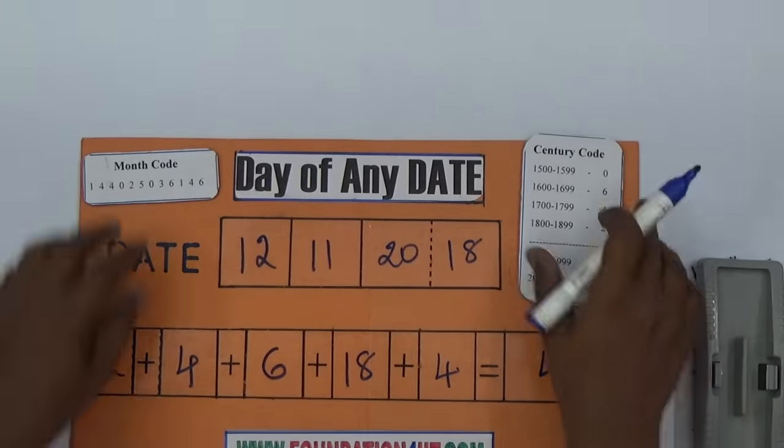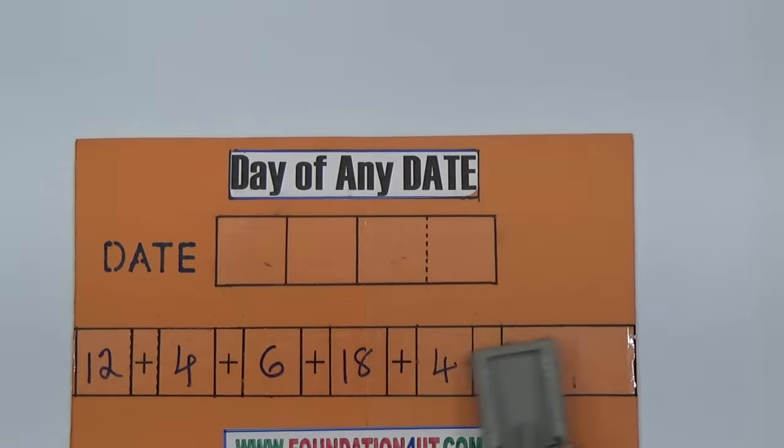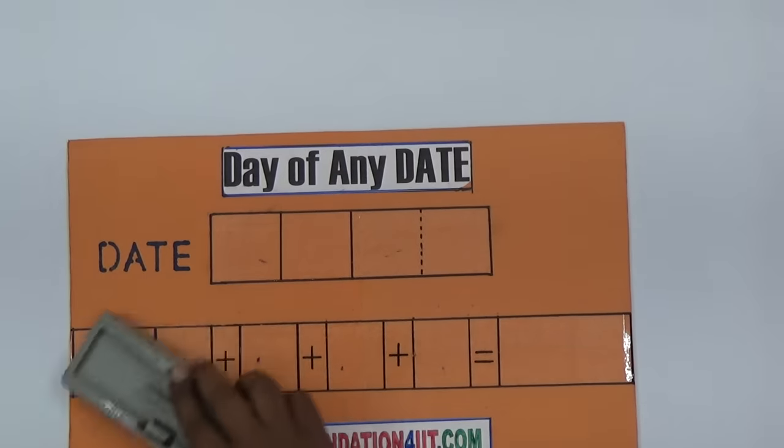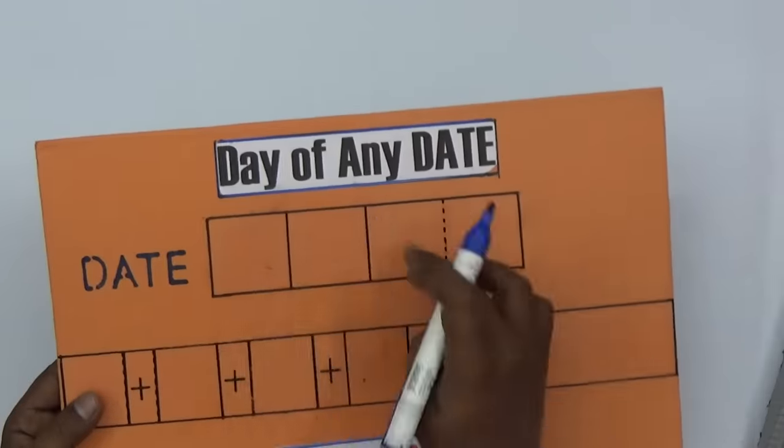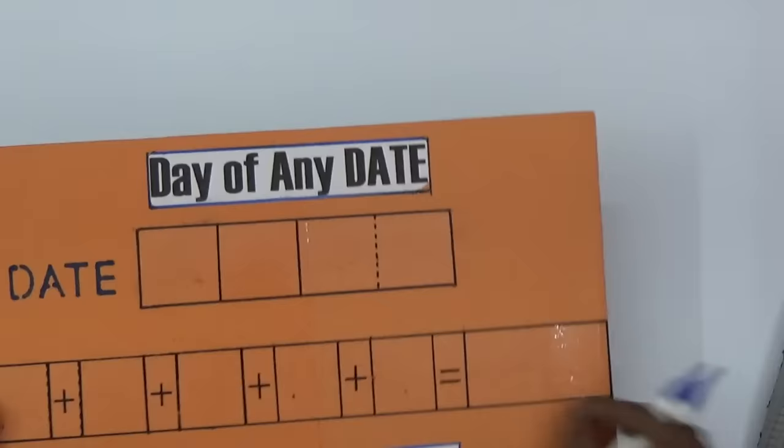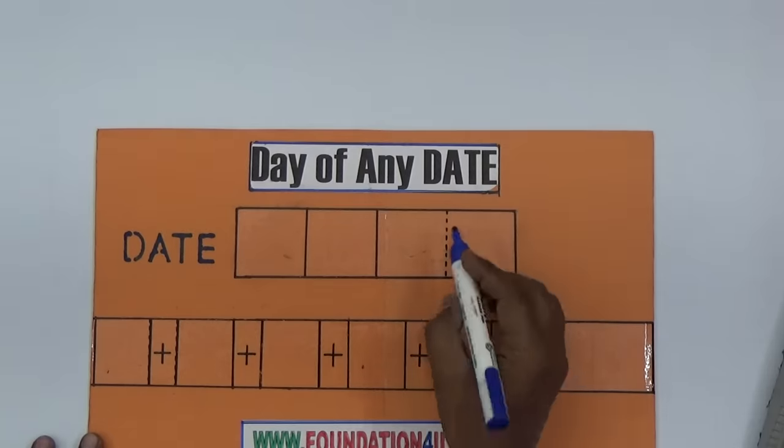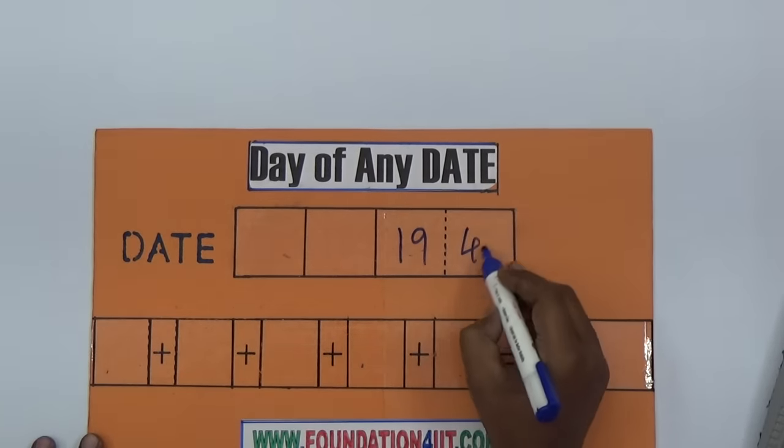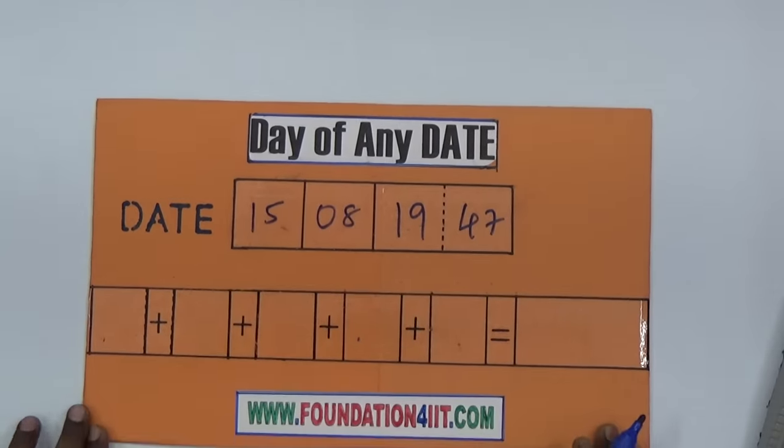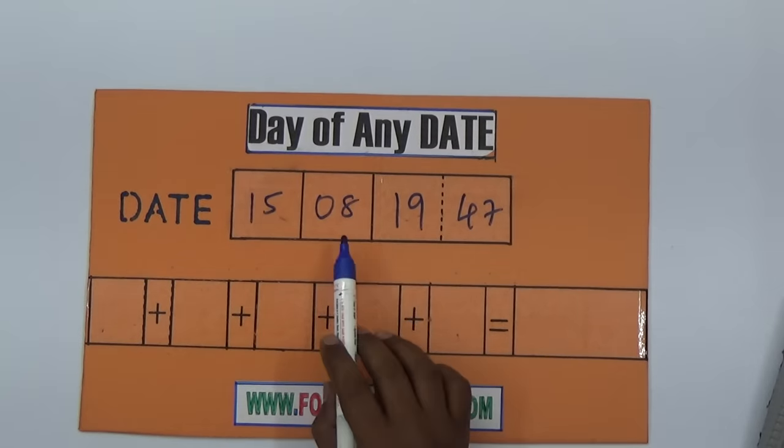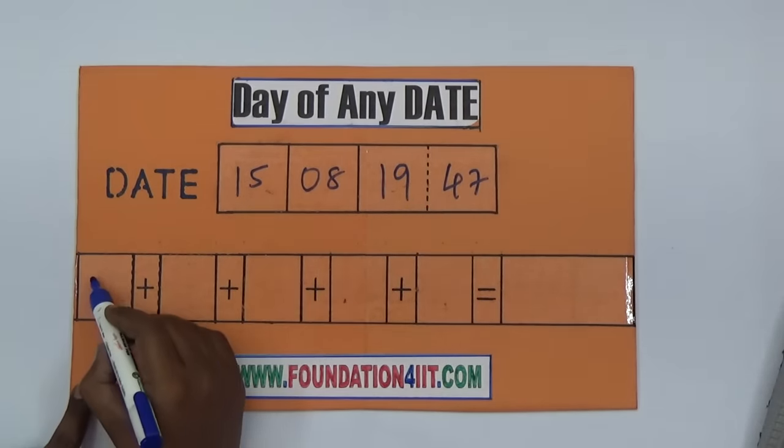Let me show one more example for a clear idea. Just use cardboard for this and in these places I use plaster. This is cello tape so you can write and erase easily. We'll take Independence Day, 1947, August 15th.